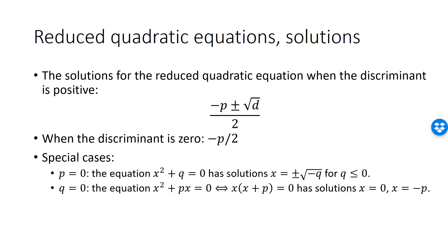The second special case is when q is equal to 0, when the equation reads x squared plus px equals 0. The left hand side can be factored into x times x plus p, from which we see that the solutions are x equal to 0 and x equal to minus p.